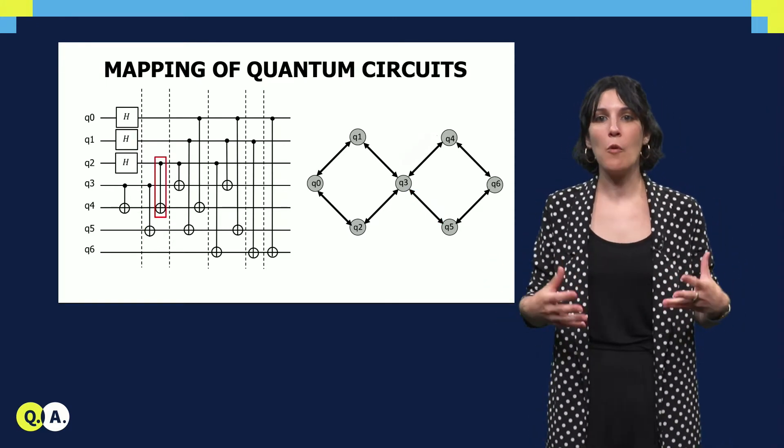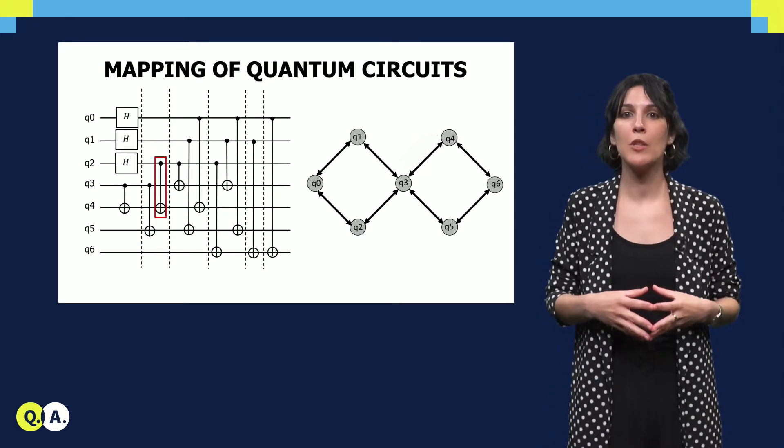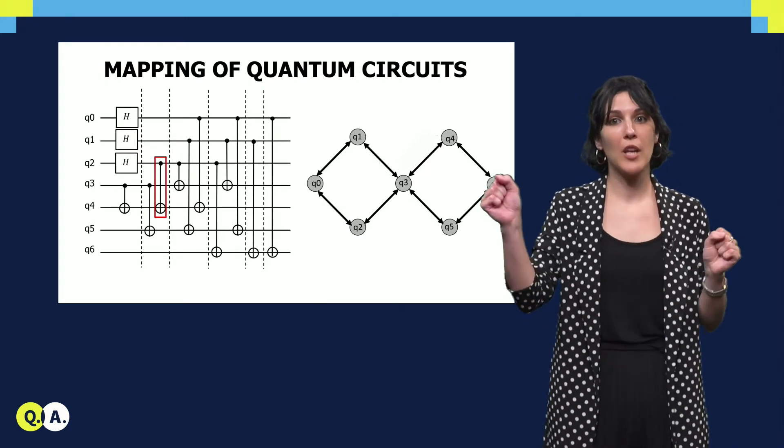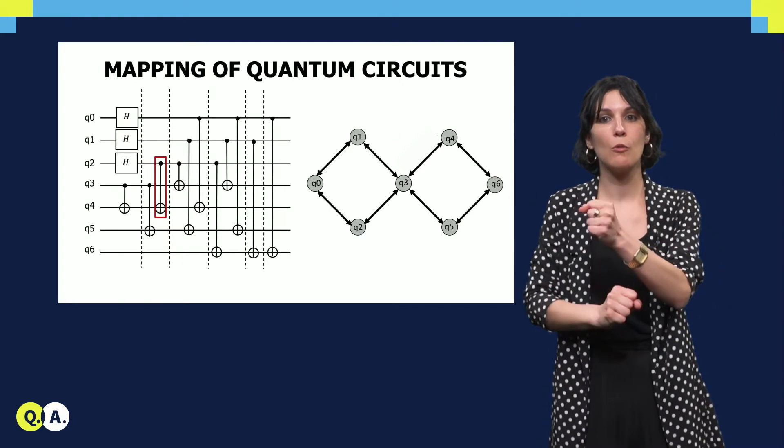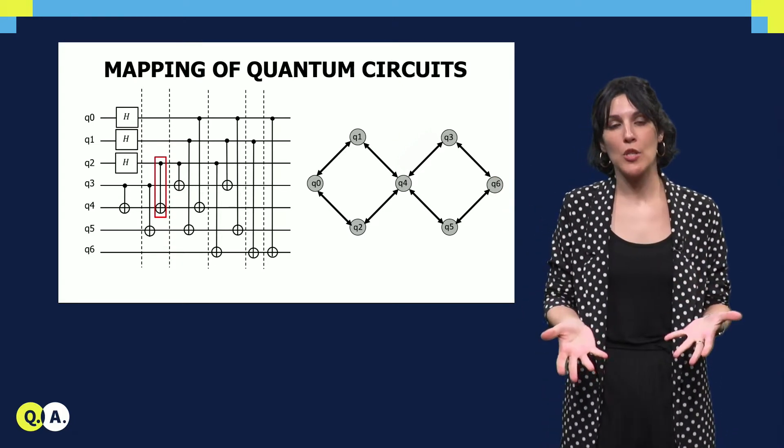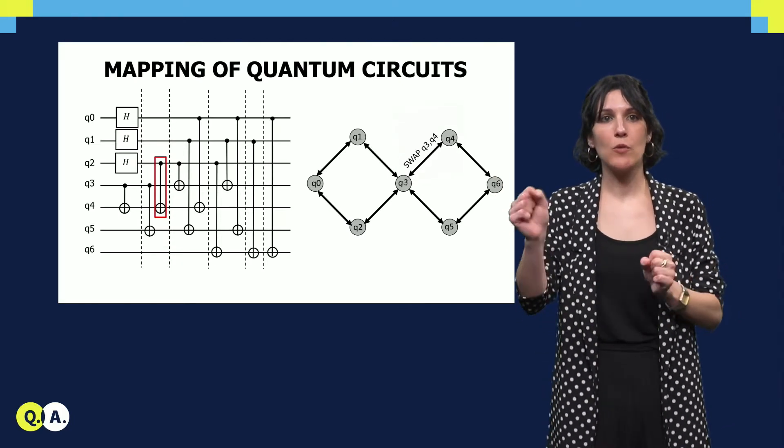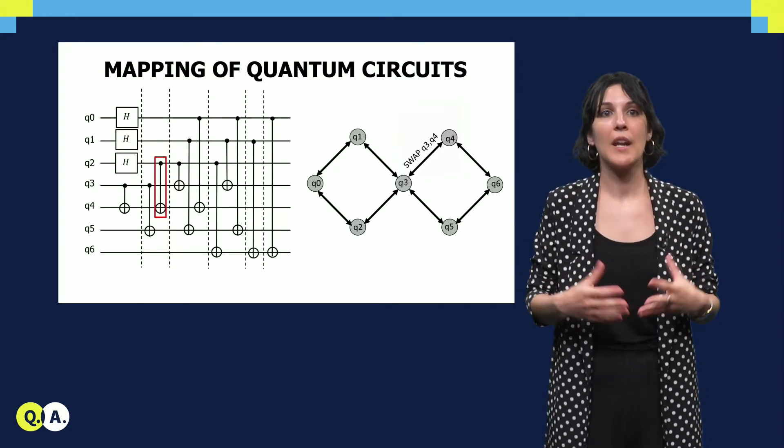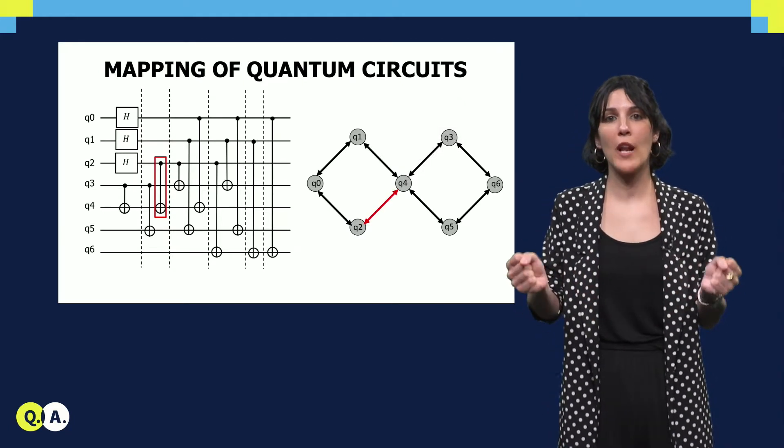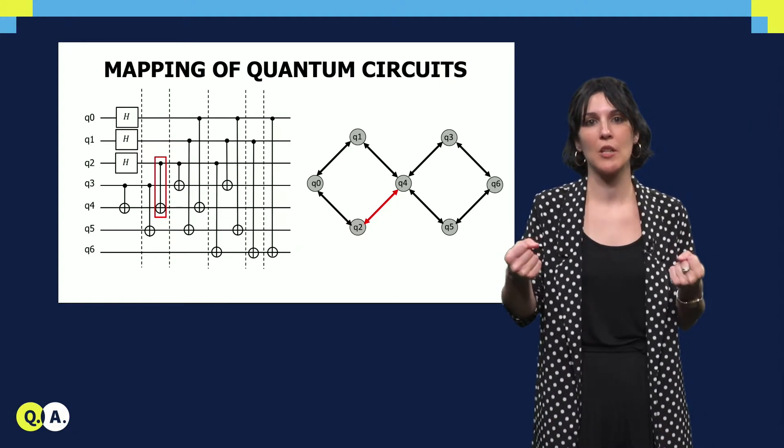However, if now we want to perform a CNOT between qubit 2 and qubit 4, they are not neighbors and they need to move to adjacent positions. This can be done just by swapping qubit 3 and qubit 4. And now, as you can see, qubit 4 and 2 can interact and perform such a CNOT.